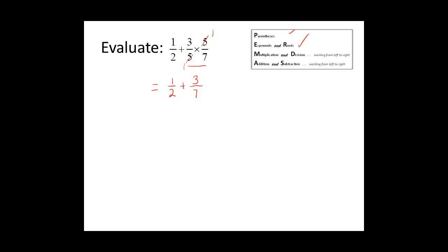Now we need to add. We are going to add one-half plus three-sevenths. When you add, you need a common denominator. The least common multiple of two and seven is fourteen, so we need to write these fractions with fourteen as the denominator.